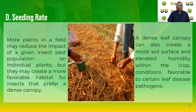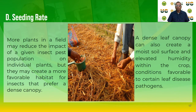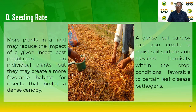Regarding seeding rate: more plants in the field may reduce the impact of a given insect pest population on individual plants, but may create a more favorable habitat for insects that prefer a dense canopy. A dense canopy can also create a moist soil surface and elevated humidity within the crop, creating conditions favorable to certain leaf or fungal diseases. Reducing the seeding rate may decrease severity of take-all disease, but a reduced canopy may allow weeds to invade. Reduced seeding may also produce more insect damage from aphids, flea beetles, and leafhoppers.